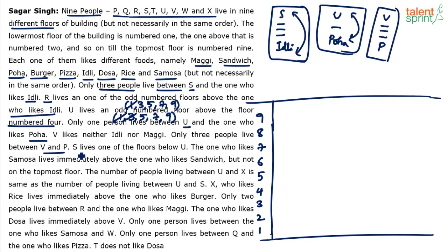S lives on one of the floors below U. So S should be below U. It depends on U's floor — if U is on the 9th floor S can be on any floor from 1 to 8, and so on. We'll use that later.